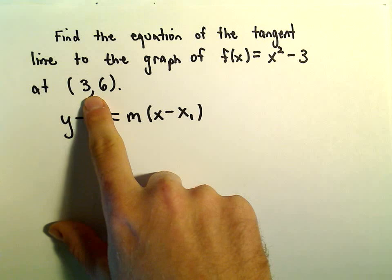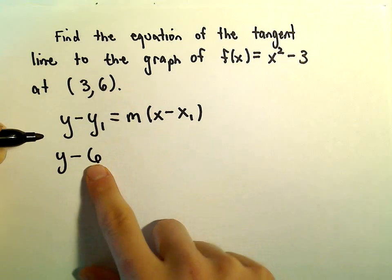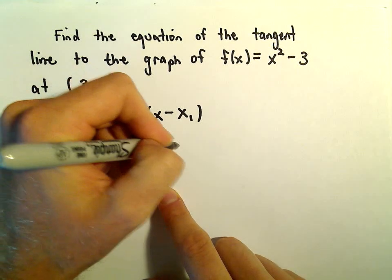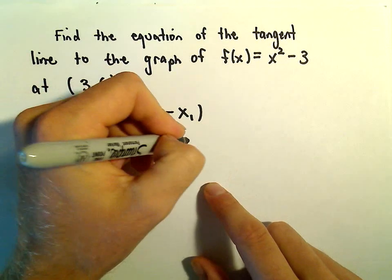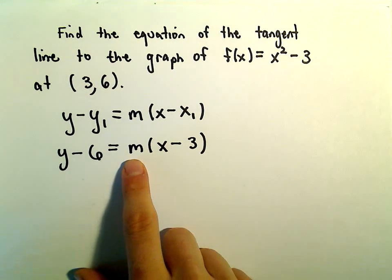We know the point on the graph is (3, 6), so I'm going to plug in 6 for y₁ and 3 for x₁. Now, the only thing we have to figure out is the slope.